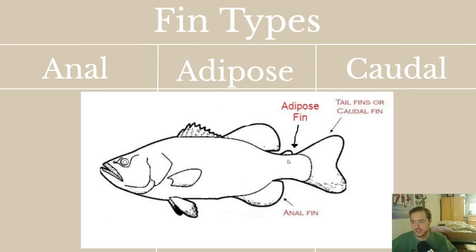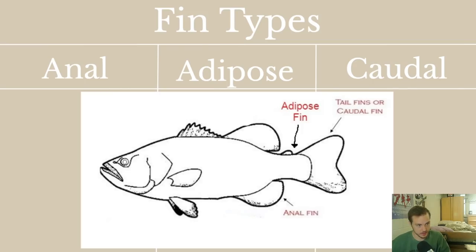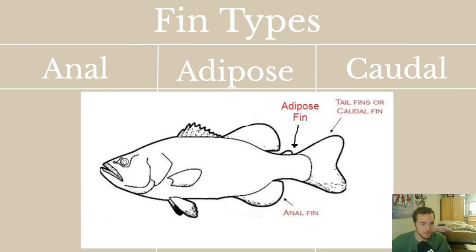The adipose fin is not actually a true fin — it doesn't have fin structures. It's just an extra little segment on the caudal peduncle of some fish, not present on all fish. It helps with swimming efficiency, keeping water running along the body. The caudal fin is the tail fin. There's a lot of variation in caudal fins — anal and pelvic fins don't vary much, but caudal fins are worth examining across different fish.